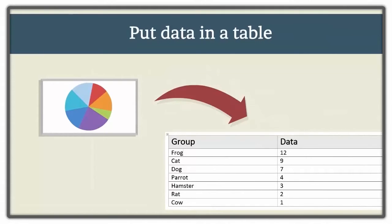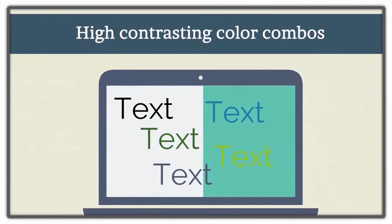As a final note, people who are not fully blind but have low vision benefit from charts, graphs, and maps that use high contrasting color combinations.